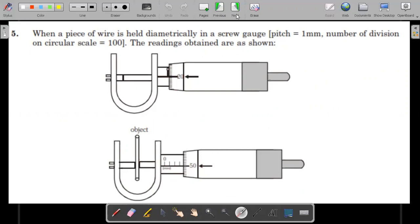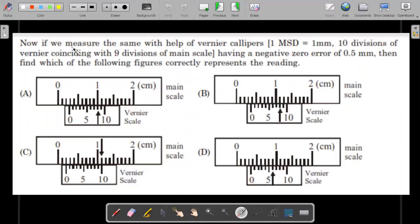Going to the second page, now if you measure the same with the help of a Vernier calipers whose MSD is 1mm and 10 divisions of Vernier coincides with 9 divisions of main scale. The usual Vernier calipers having a negative zero error of 0.5mm. Then you find which of the following figures correctly represent the reading. If you have to match the reading of the previous pages screw gauge with the Vernier calipers with both of them actually having errors, which of the four figures in the options A, B, C, D are going to match with it.